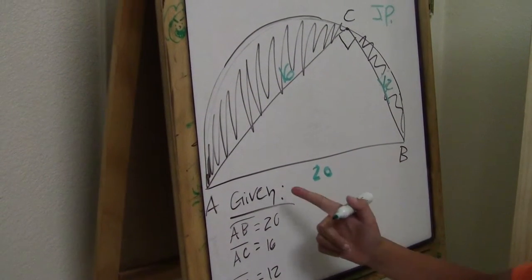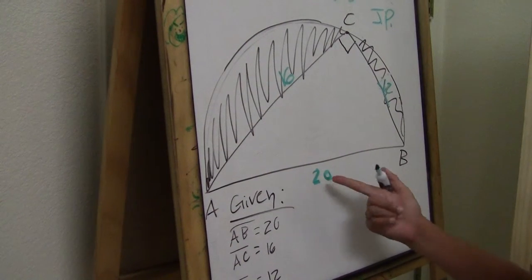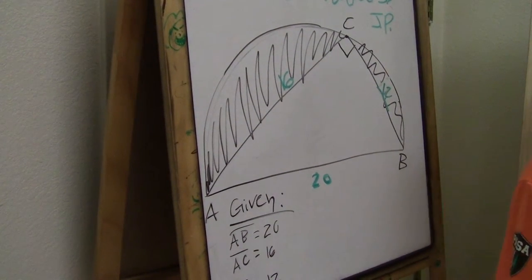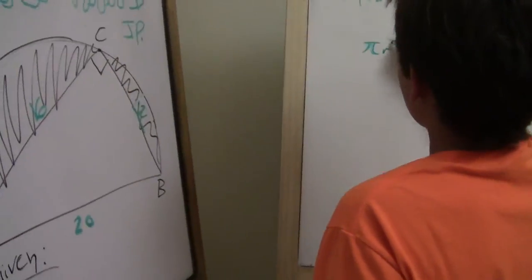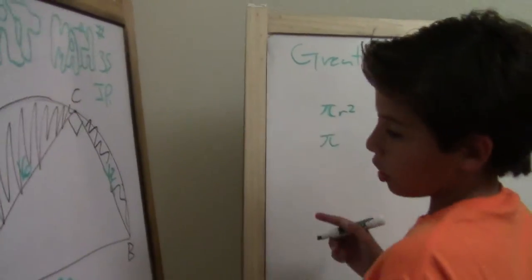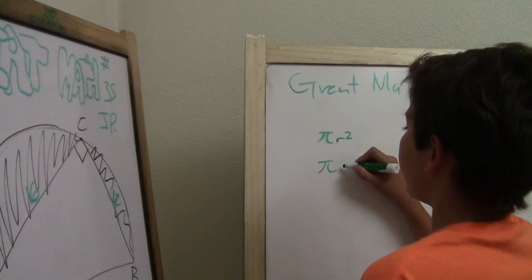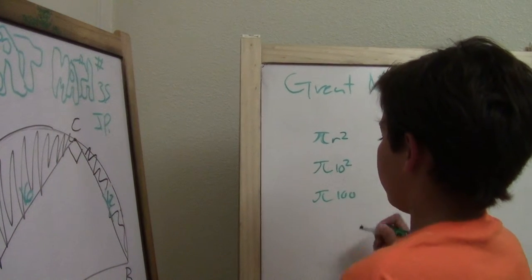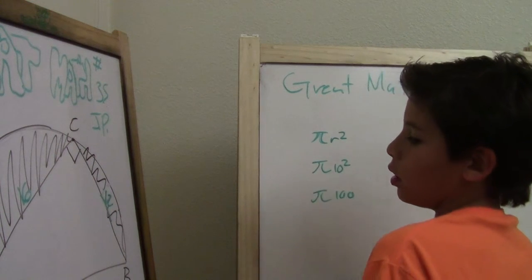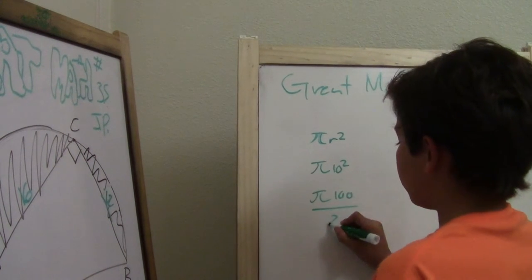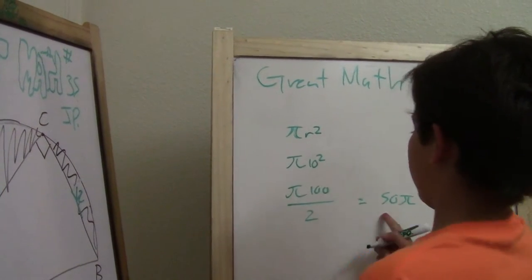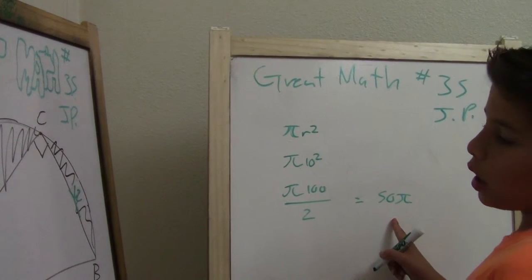Now, since we know the area, this is 20, half of it is 10. So to find the area of that, it's pi r squared. Remember guys, from the last video, that's how you find the area of a circle. Pi 10 squared, which is pi 100, or 100 pi, but it's half of it, which will equal to 50 pi.